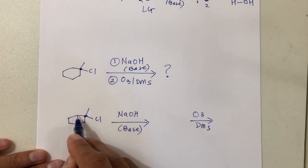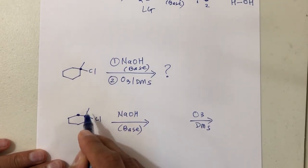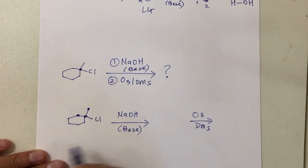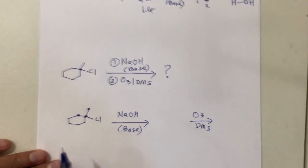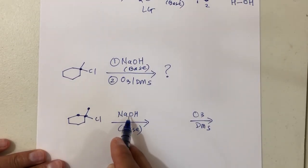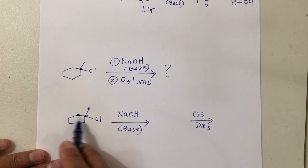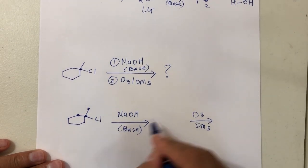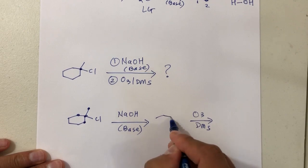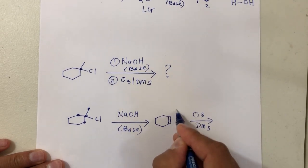You have an alpha carbon with a leaving group and beta 1 and beta 2. In synthesis, we only write the major product, not the minor. Since we are using a normal base, this will be your major product.